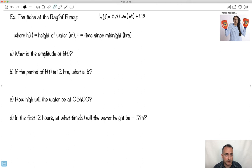So there's a place in Canada that has huge tides. I think it's the place with the largest tides in the world, called the Bay of Fundy. It's right near where my mom's family is from in eastern Canada. The tides can be modeled by h(t) = 0.75sin(bt) + 1.15, where h(t) is the height of the water in meters and t is the time since midnight in hours.